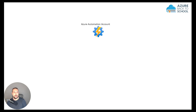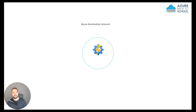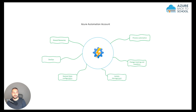When you create an Azure Automation account, you will have access to different parts: process automation, shared resources, a DevOps environment, change tracking and inventory, update management, and Desired State Configuration or DSC. I'm going to briefly explain each part of this Azure Automation account and how you can use them for different scenarios.